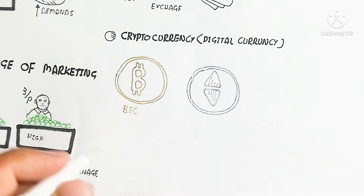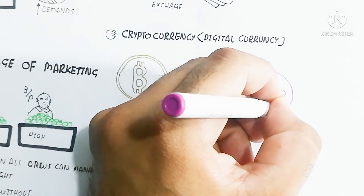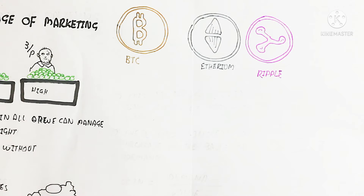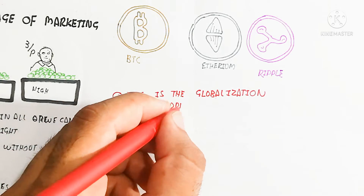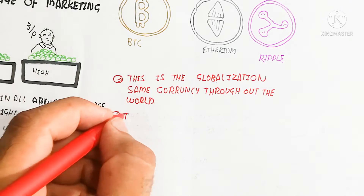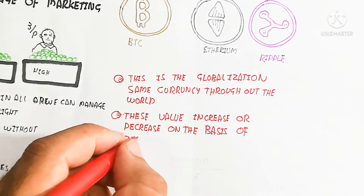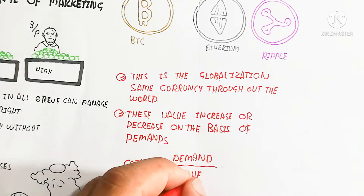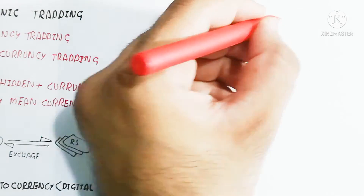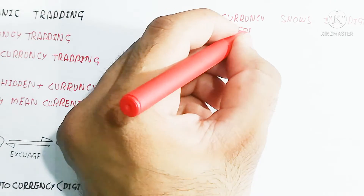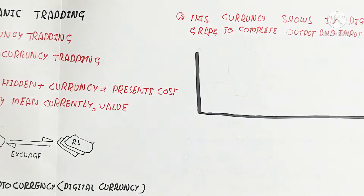The blockchain system was introduced first by Satoshi, who was a scientist — this created a globalized, same currency throughout the world. The benefit is that the value is the same globally due to globalization and the global village concept. These values increase or decrease based on demand. For example, when more coins are in the market, value decreases. When fewer coins are available, demand increases and the value of the coin increases.